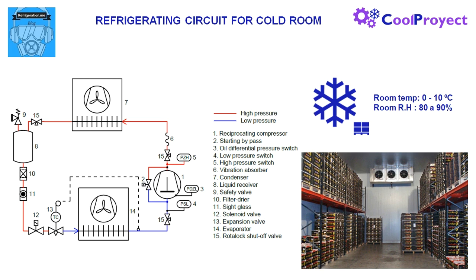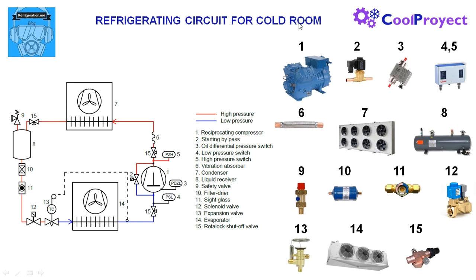We can see on the right of the screen each component numbered and accompanied with a picture. First we have the 4 basic components: number 1 is the reciprocating compressor, number 7 is the condenser, number 13 is the thermostatic expansion valve, and number 14 is the evaporator. Just with these components the system can work, but we usually add some other auxiliary devices in order to improve the functioning of the system.